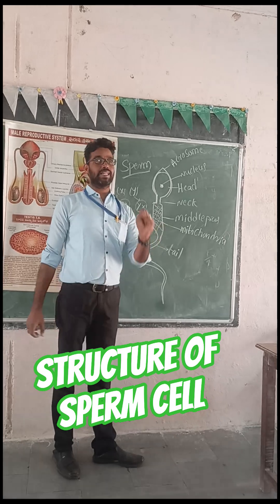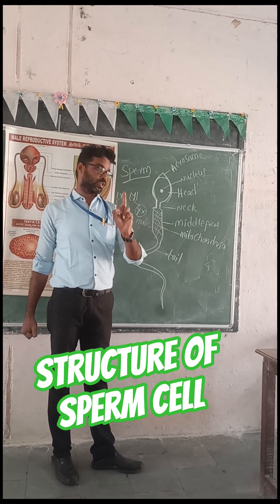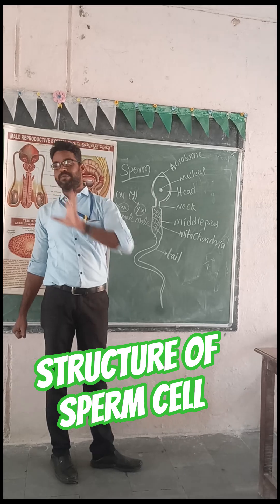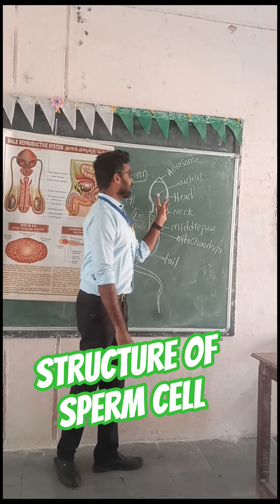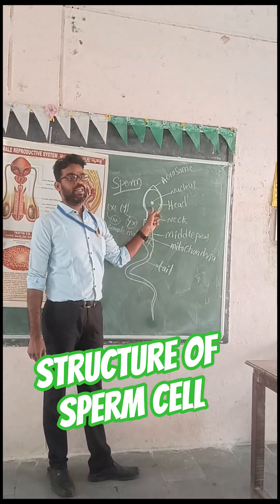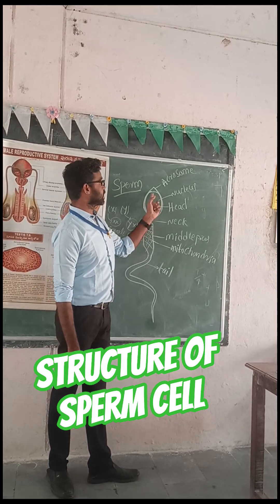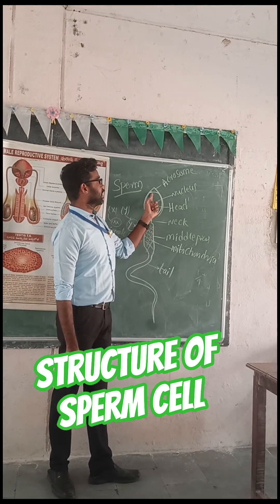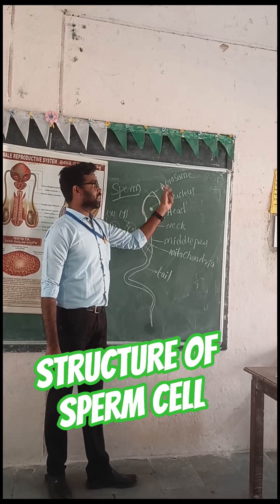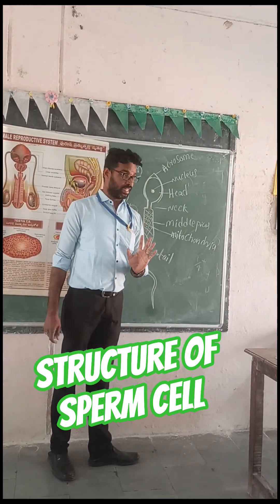How many types of sperm cells are there? Two kinds: one is X chromosome sperm and another is Y chromosome sperm. The headpiece contains the nucleus, which is responsible for the chromosomes of the male parent. And the head part also contains one acrosome.